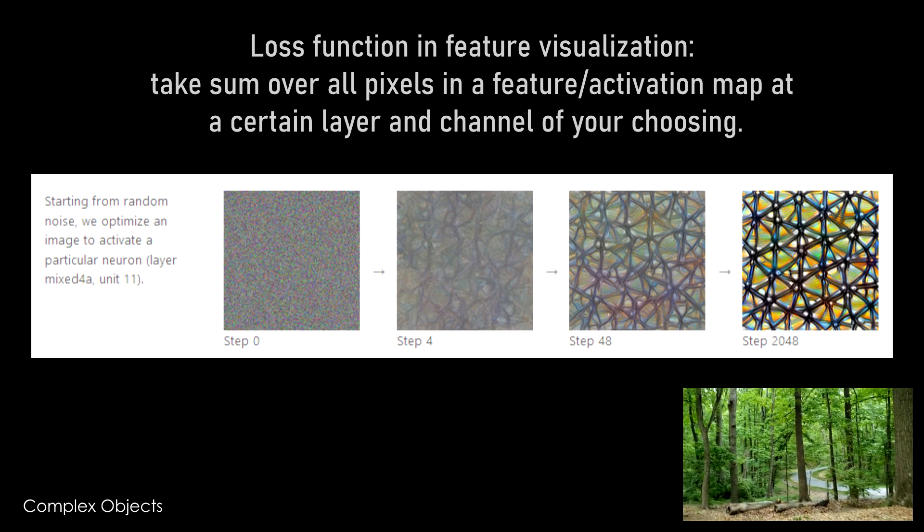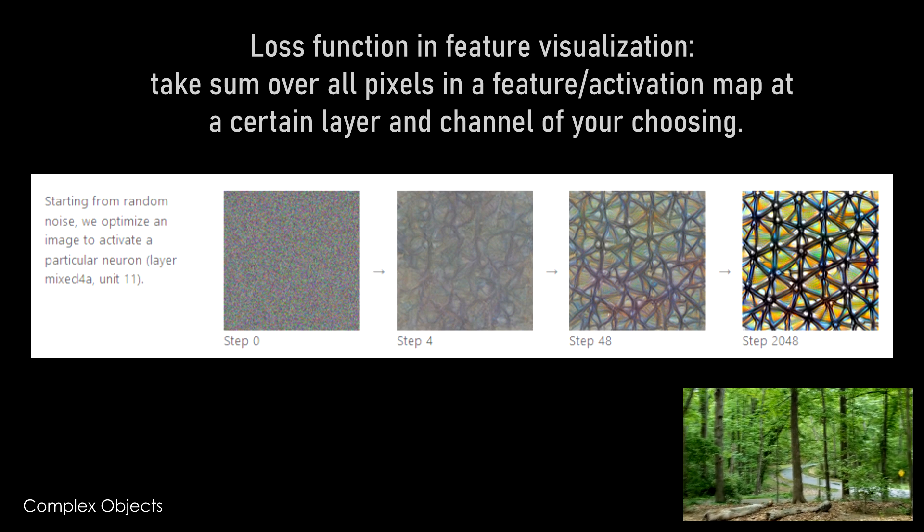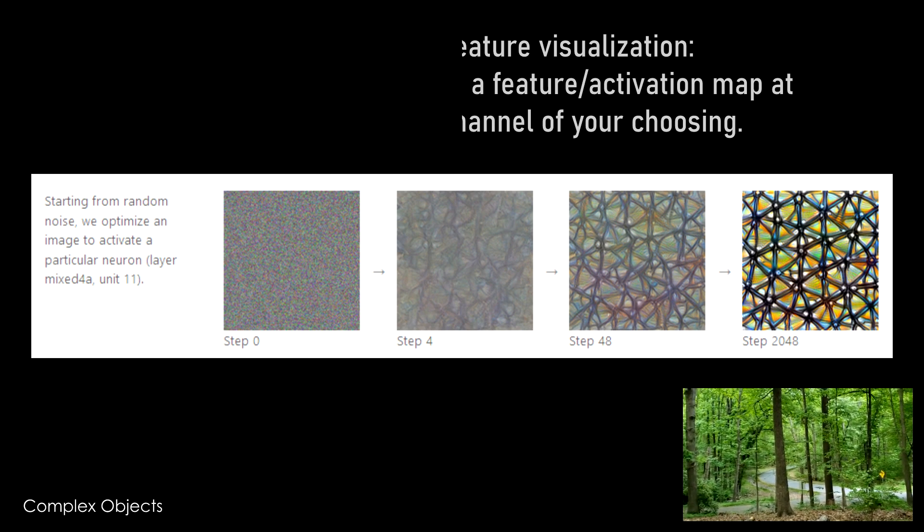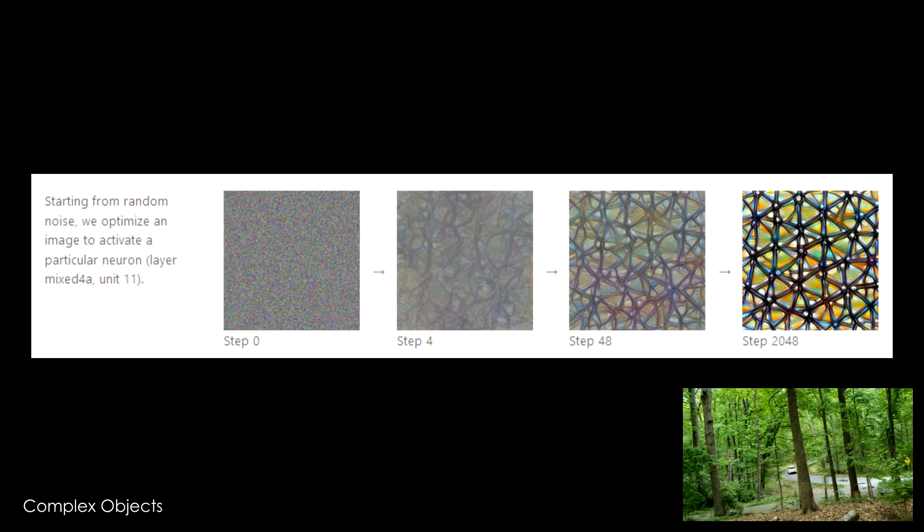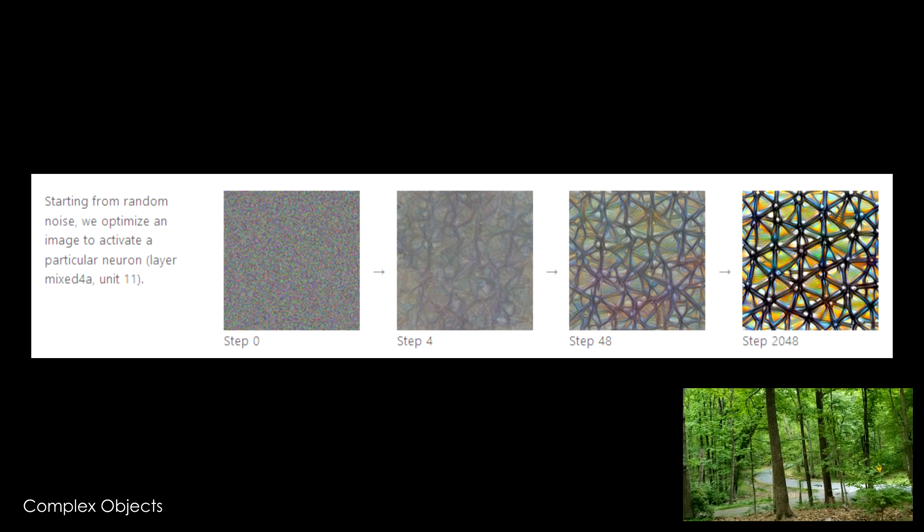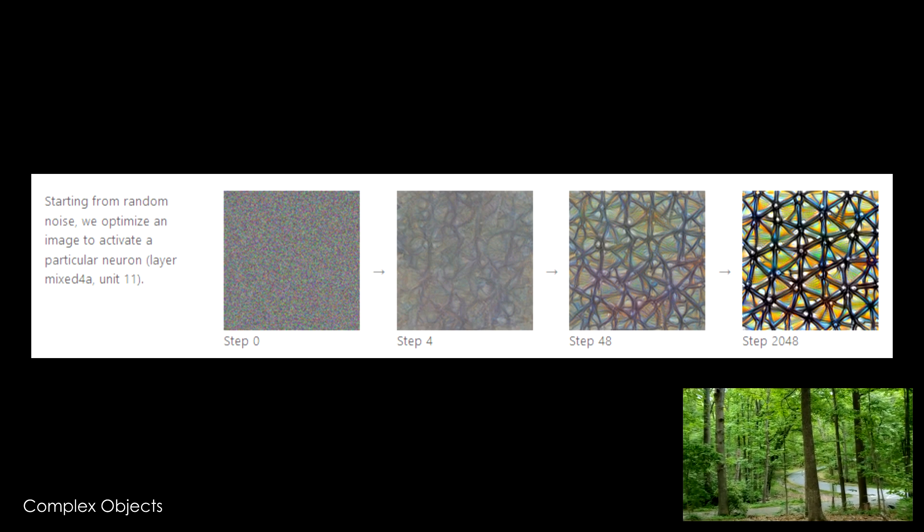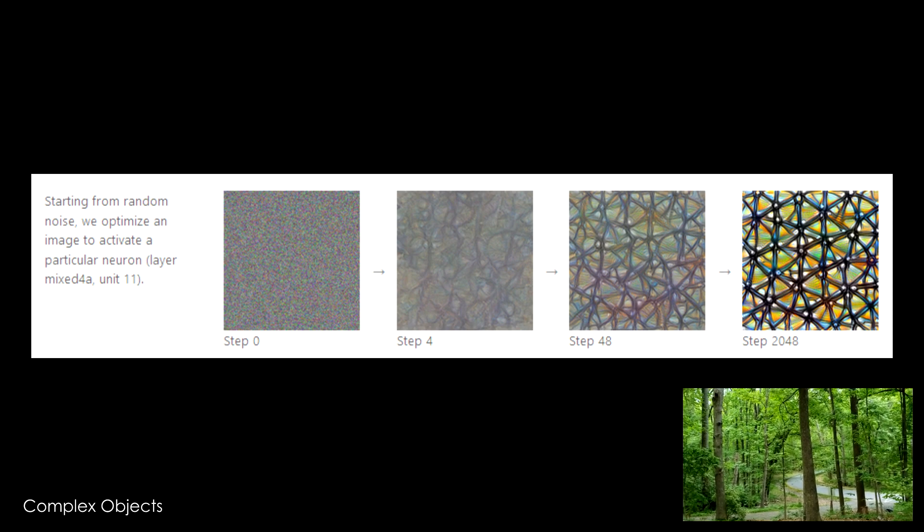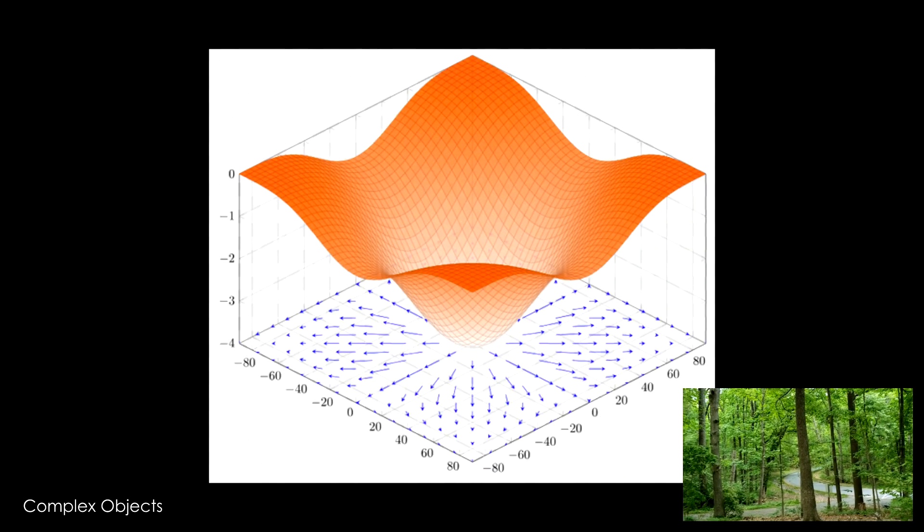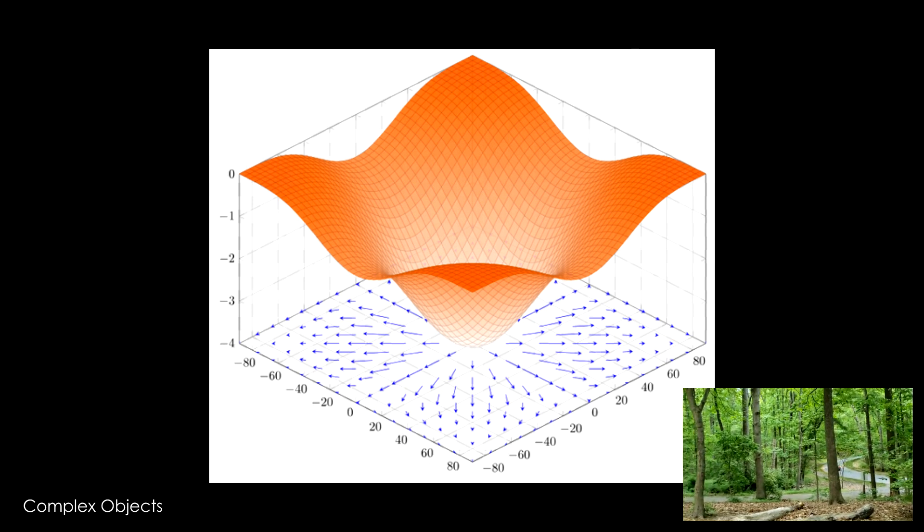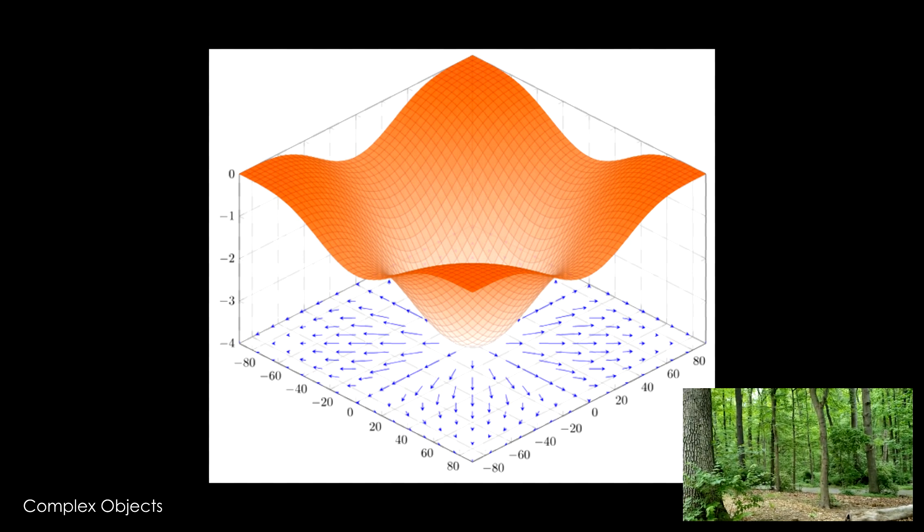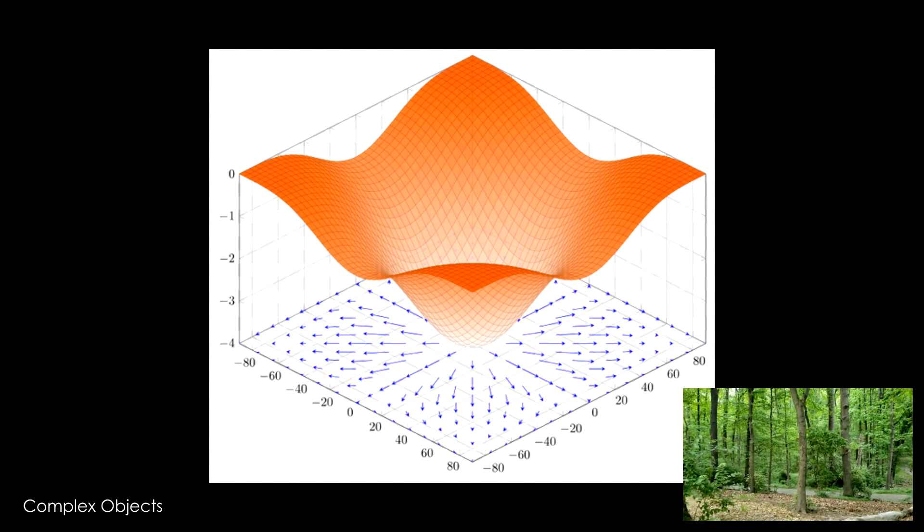So what's happening in these what I call image learning based methods is that you are just applying a gradient of that loss function with respect to the input image. And that gradient, normally like in calc 3 and stuff you think about a gradient as like a vector in a space that points in the direction of greatest increase of the function.